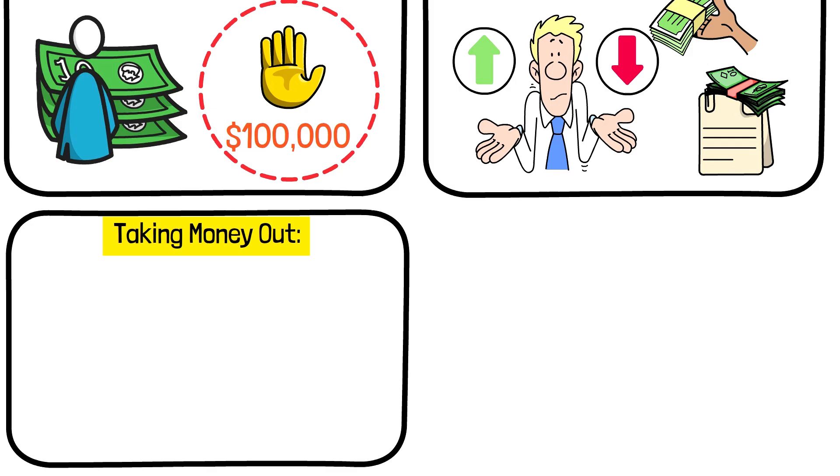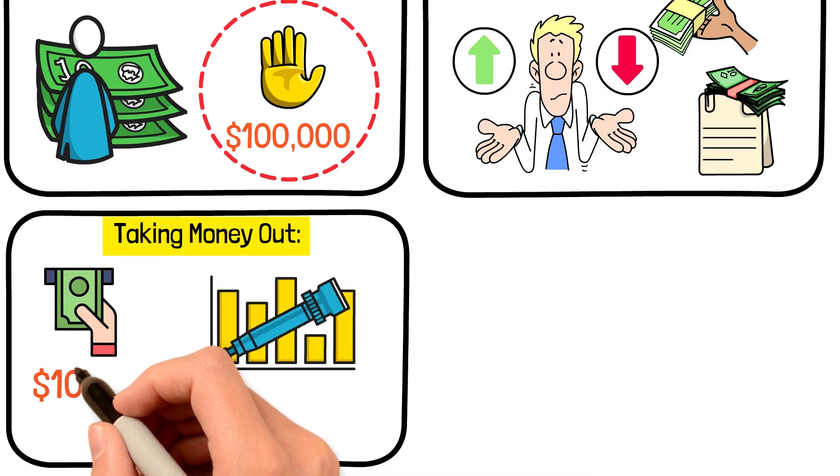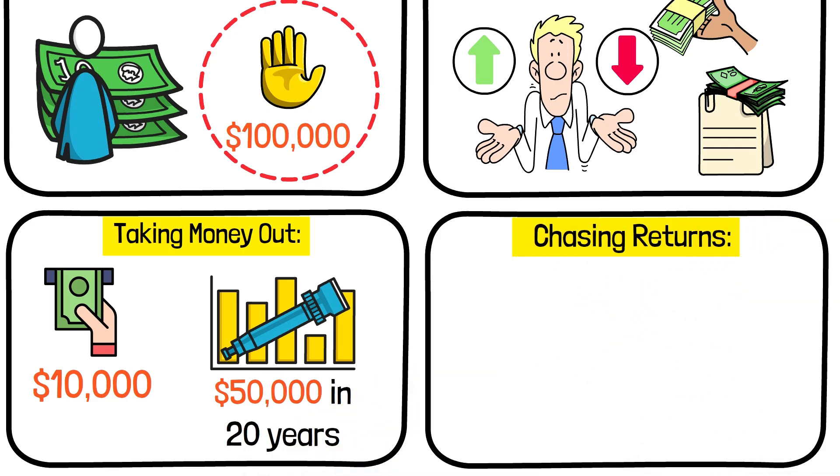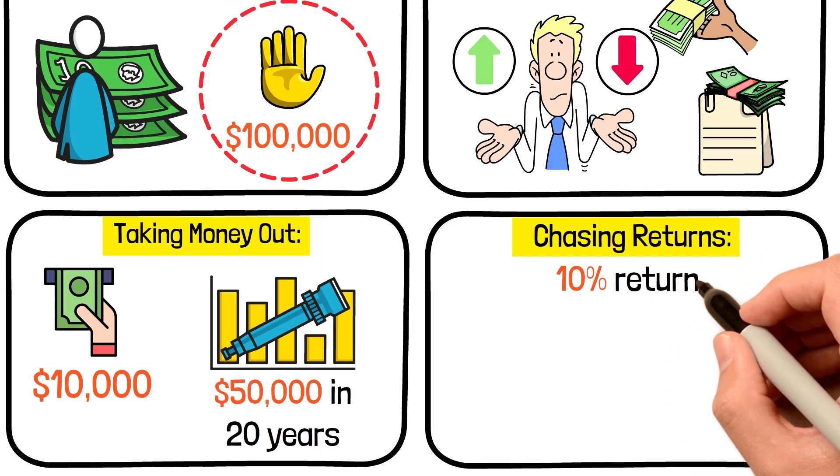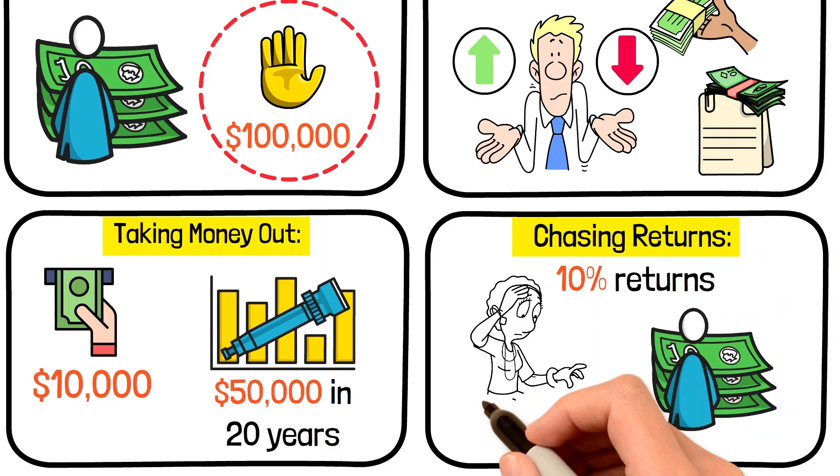Taking money out. Every withdrawal steals from your future compound growth. That $10,000 you pull out today could be worth $50,000 in 20 years. Chasing returns. The 8-4-3 rule is based on consistent 10% returns. Constantly jumping between investments will likely cause underperformance.